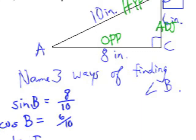If I use the tangent function, tangent of B is going to be the opposite over adjacent, which is 8 over 6. Let's figure out the decimal values of these. 8 tenths is 0.8, 6 tenths is 0.6, and 8 over 6 is 1.3 repeating.